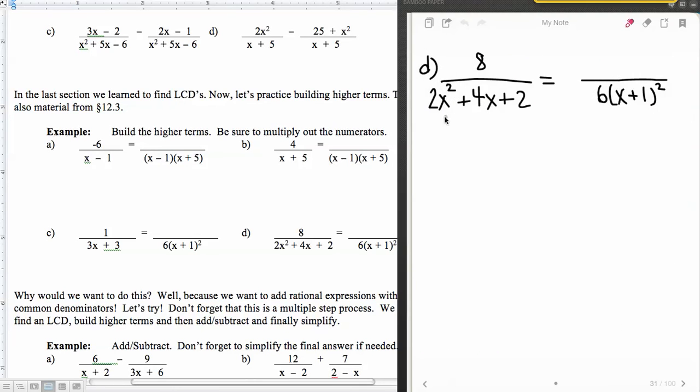So part D, again, I need to factor this in order to be able to see what's missing to make my common denominator. So all these have a factor of 2 in them, so I'm going to take out that factor of 2, and that's going to leave me with an x squared, plus a 2x, and then plus a 1, and then I'm going to look at that and go, that's a perfect square, could it be a perfect square trinomial?